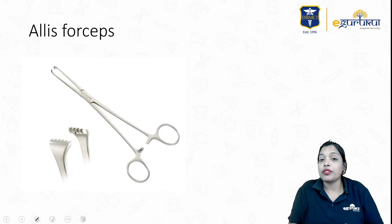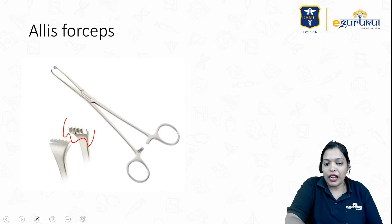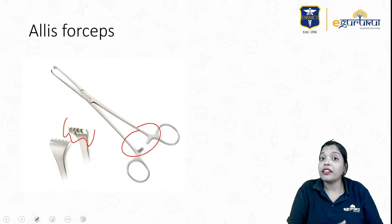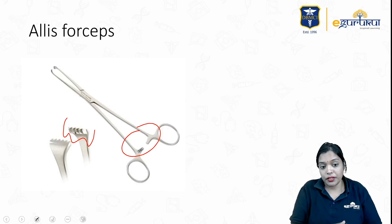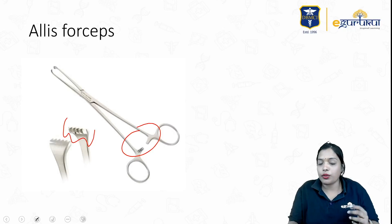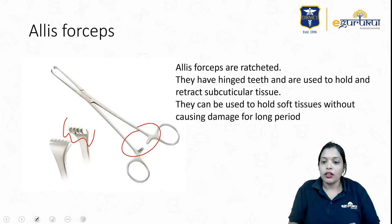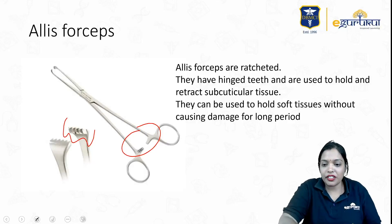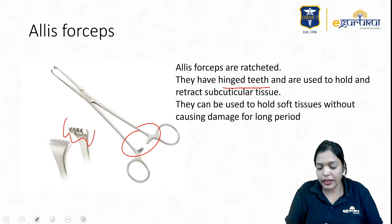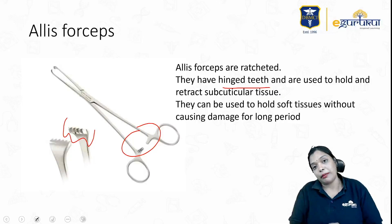This is the Allis forceps — it is a traumatic forceps. It has multiple teeth at the edge and a clamp. It is used for holding tissues, and is ratcheted with hinged teeth, mainly to retract subcuticular tissues — edges of tissues, rectus sheathes. You cannot use this for holding soft tissues for a long time as it can cause damage.